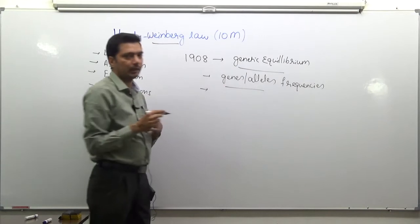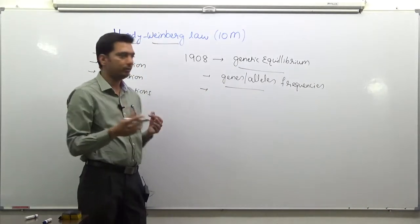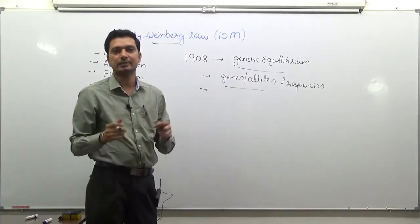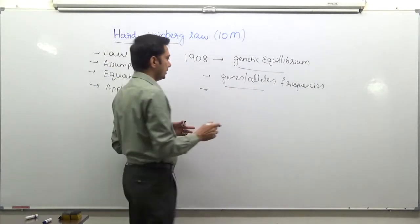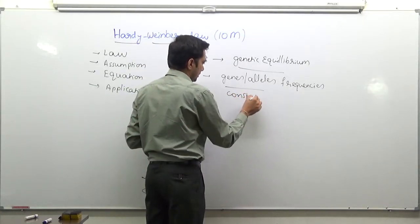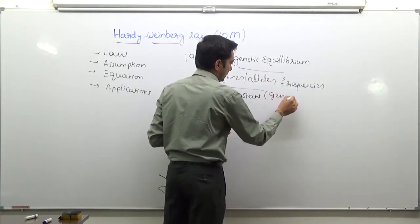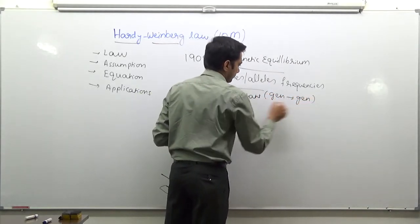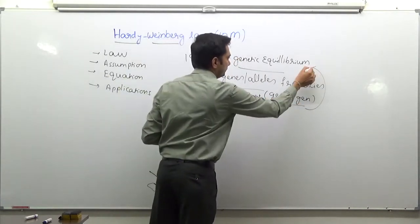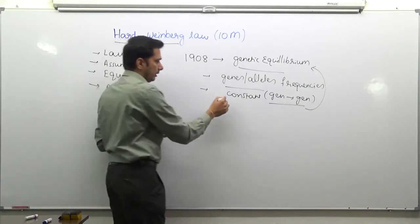The exact law that they are talking about is how gene frequencies and the allelic frequencies remain constant from generation to generation. These frequencies remain constant from one generation to the another generation, meaning that they are actually at an equilibrium through the inheritance process.